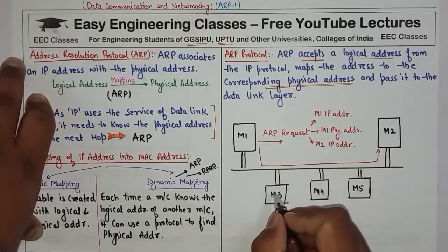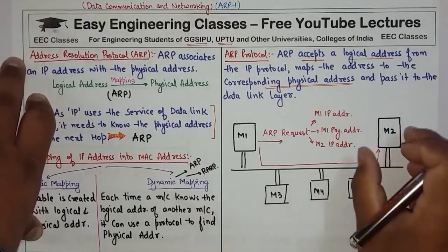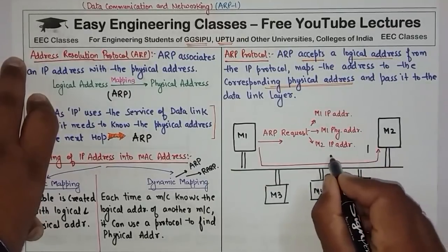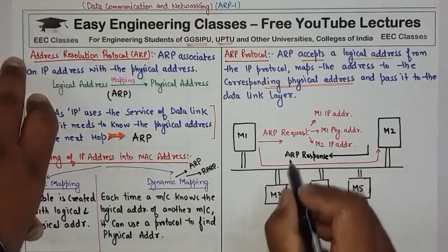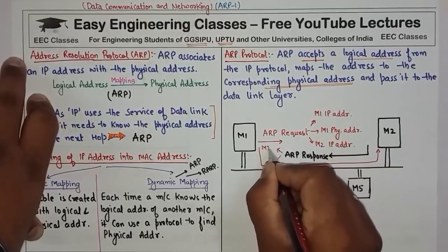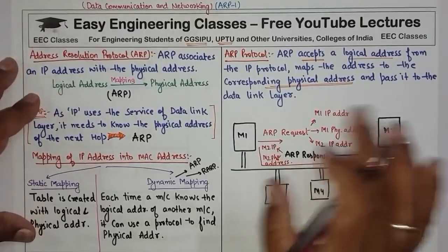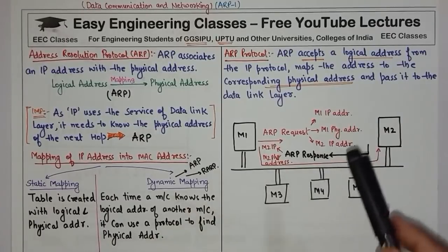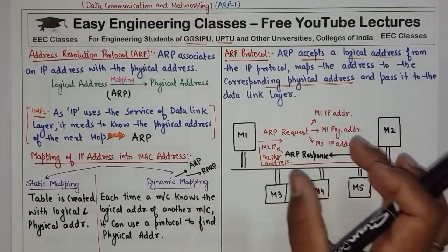The ARP request packet travels to M3, which checks its IP address — if it doesn't match, it discards it. Then it goes to M4, which doesn't match, and M5, which doesn't match. M2 matches the IP address. So M2, in response, sends back one ARP response packet containing M2's IP address and M2's physical address. M1 sent the request with M2's IP address, and M2 responded with its IP and physical address mapping.